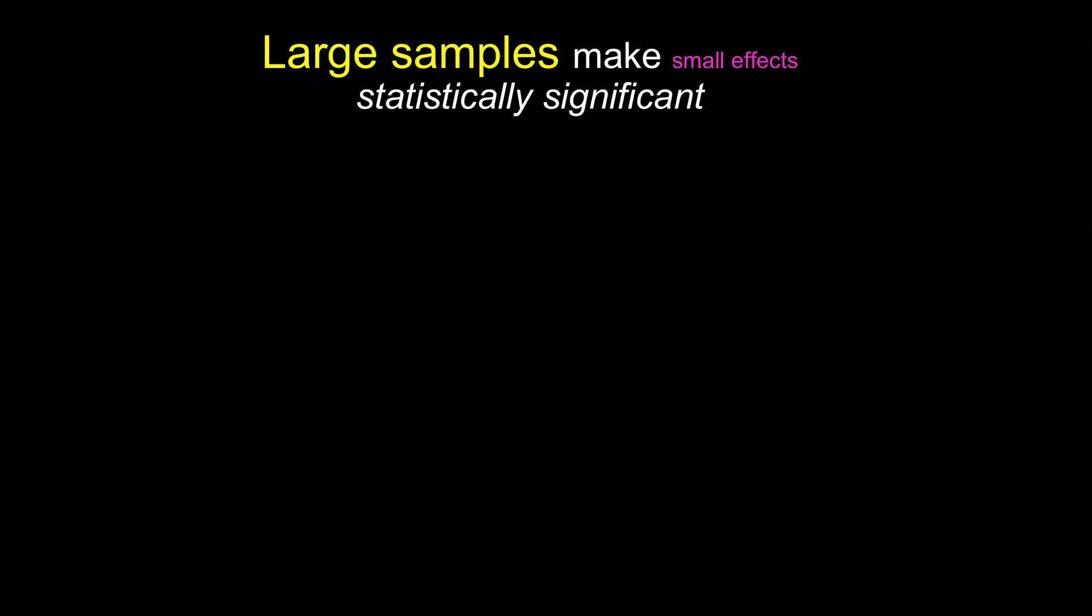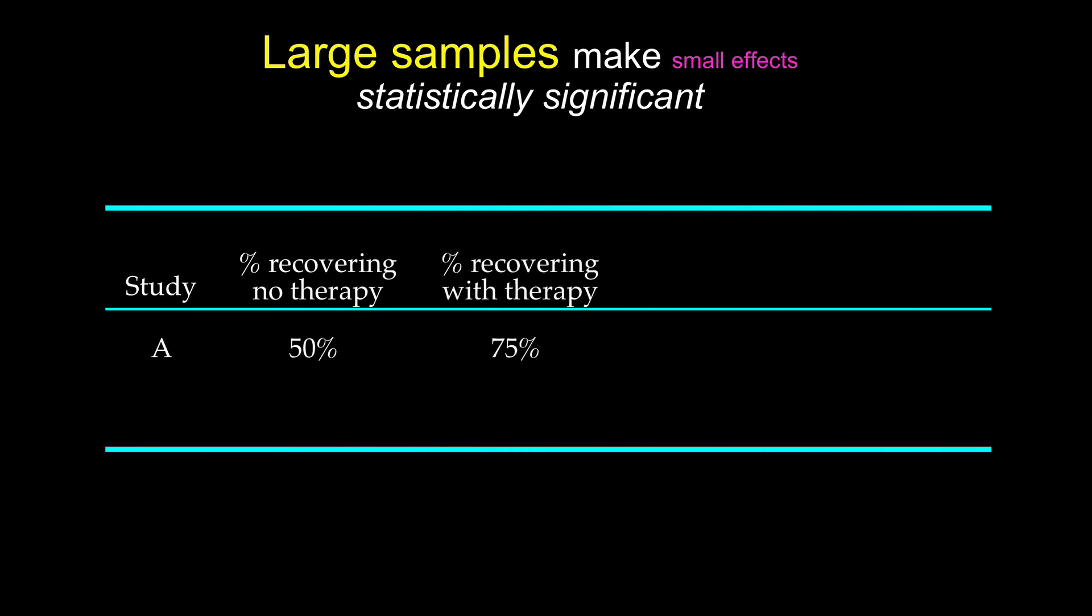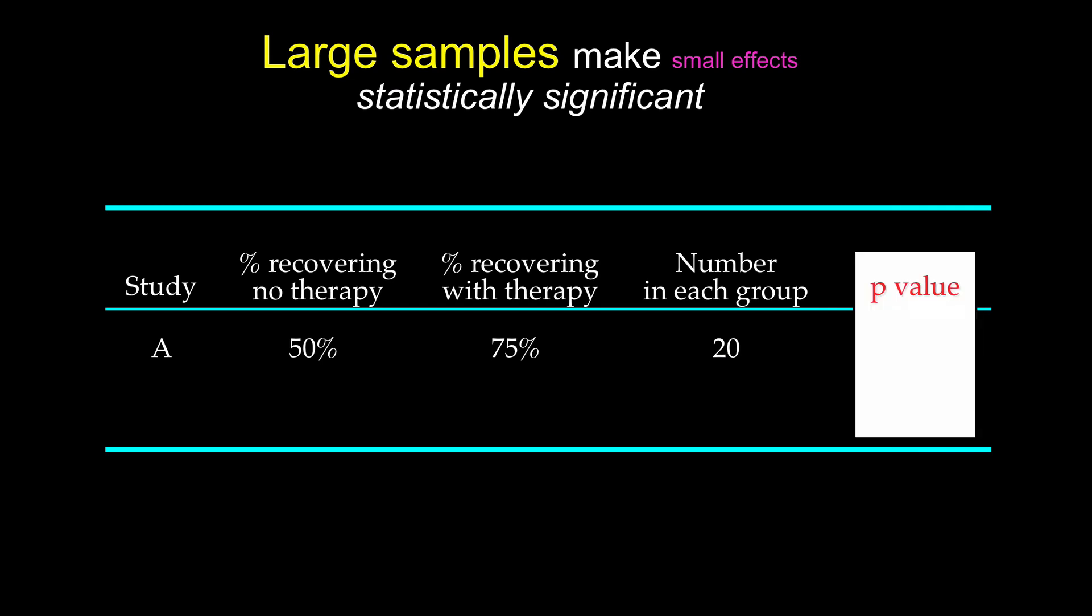One more point. Large samples make small effects statistically significant. Imagine a study like this. 50% of the patients who are not receiving therapy nonetheless recover. Among those patients taking therapy, 75% recover. That's a pretty beneficial effect. But there are only 20 patients in each group. The p-value? It's going to be large. 0.10. It's not statistically significant. Yet it is a promising therapy.